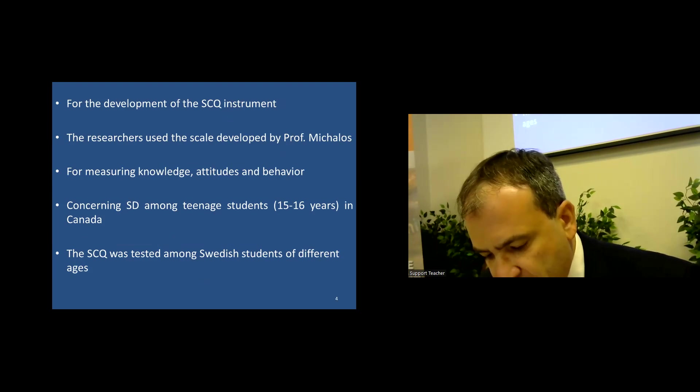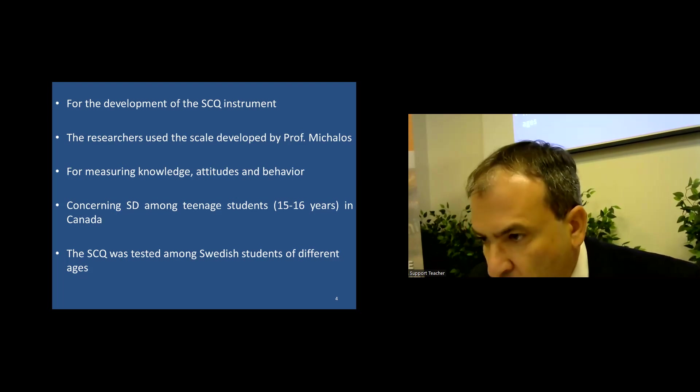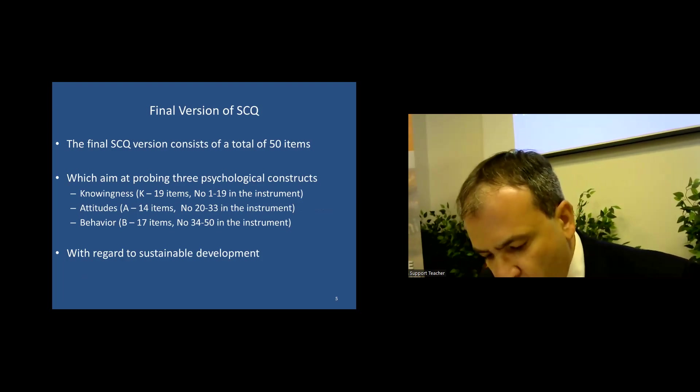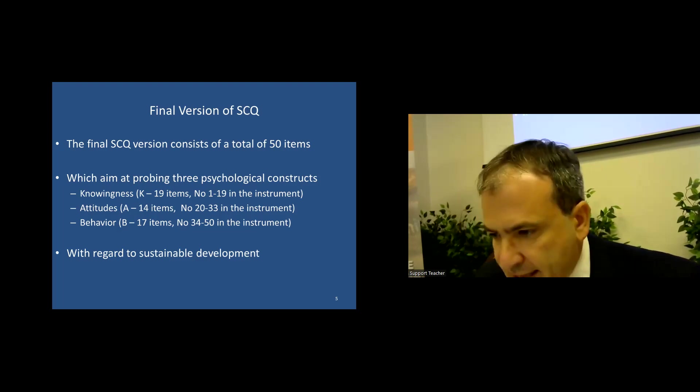The questionnaire instrument was tested among Swedish students of different ages, specifically from 12 to 19 years old. The final version consists of a total of 50 items, which aim at probing three psychological constructs, namely knowingness with 19 items, also attitudes with 14 items, and finally behavior with 17 items. Each psychological construct, knowingness, attitudes, and behaviors, contain items that were related to all three dimensions of sustainability, namely environment, society, and economy.